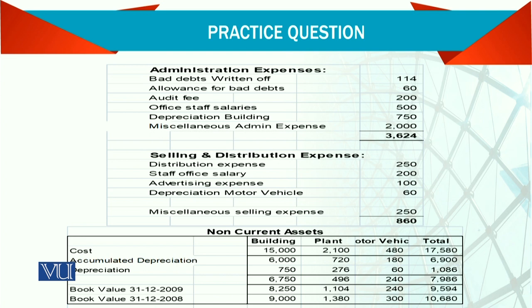Selling and distribution expenses — some people call them marketing expenses, which is the same thing. These include: distribution expense, staff salaries, advertisement expense, and depreciation of motor vehicle. The total is 860.